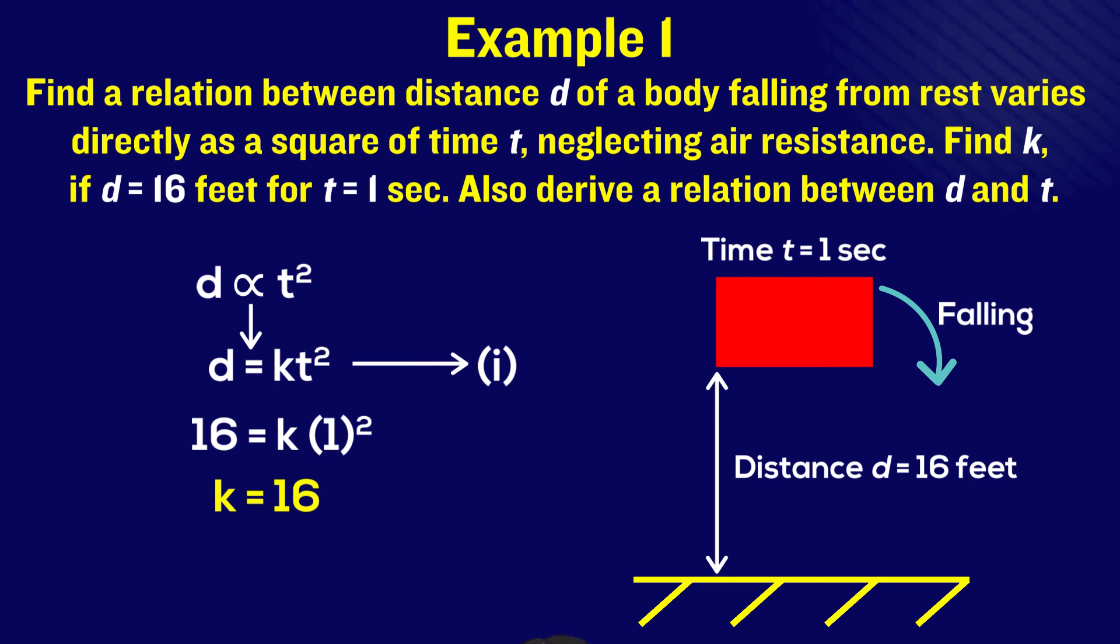Is this it? No, we also need to find the relation between d and t. So by substituting the value of k back in equation one, we get the relation between d and t as well. This was but one example.